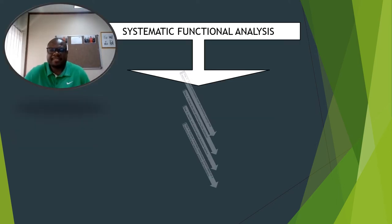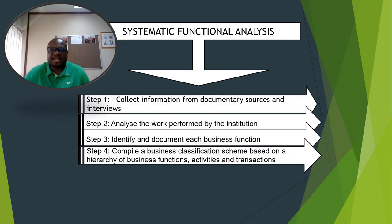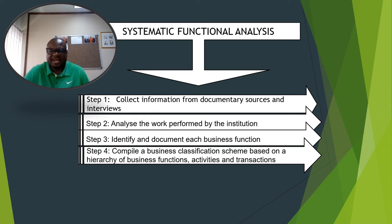For systematic functional analysis, I'll take you through step by step. In the first step, you collect information from documentary sources and interviews. Documents such as strategic plans, annual reports, organograms, and more are assessed and evaluated so that one can identify the subjects of the organization from general to specific.